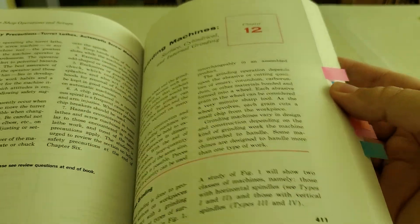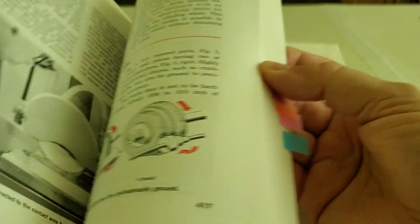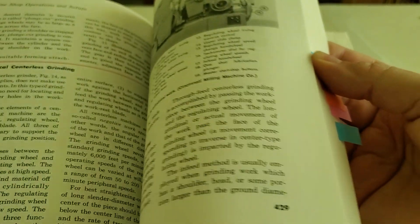It talks about grinding machines, and it covers blanchard grinders, surface grinders, and cylindrical grinders, and all sorts of things about radiusing wheels.